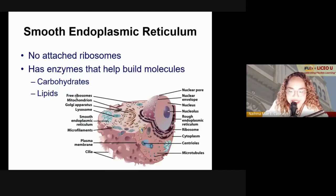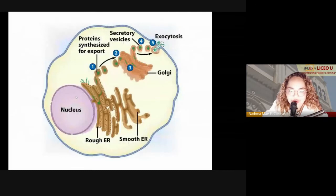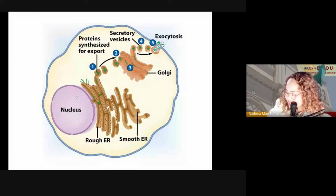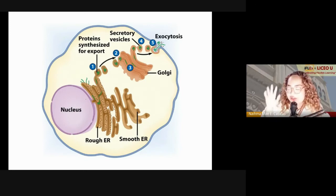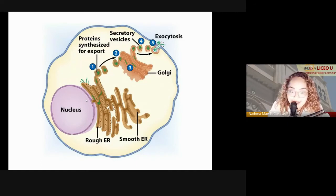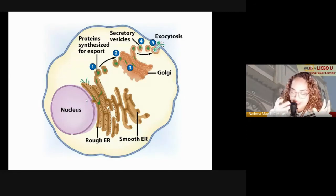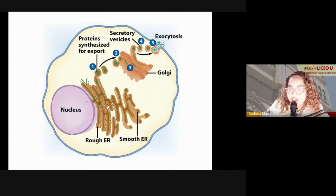Let's go to the endoplasmic reticulum. I want you to understand how the nucleus is connected to the ER and to the Golgi apparatus. For instance, when your brain signals the cell to make a certain protein or hormone, that signal is sent to the cell and received by the nucleus. The nucleolus then produces the needed protein using ribosomes.